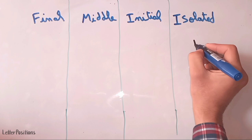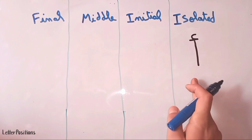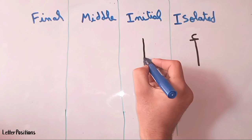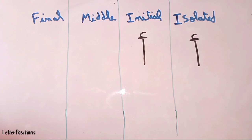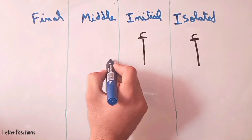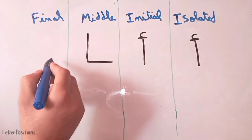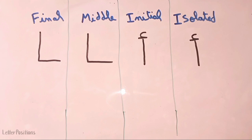The letter alif is a straight line, and we put hamza on the top. This is the isolated form. In the initial form, the shape is the same as the isolated form. In the middle form, we start from here and go up — that's it. The final form has the same shape as the middle form.